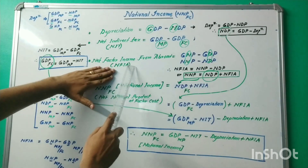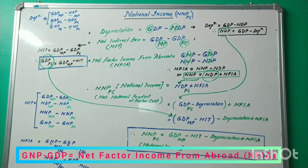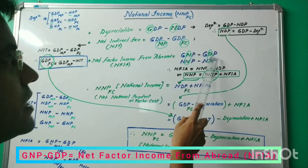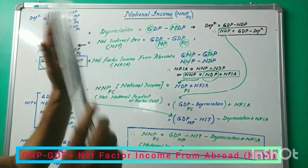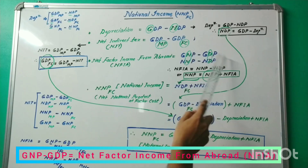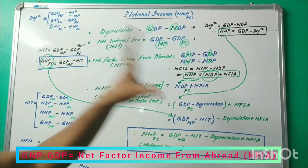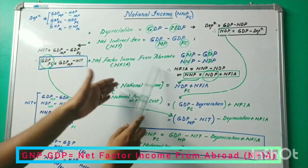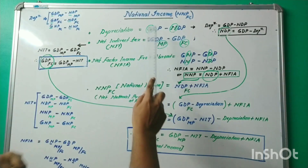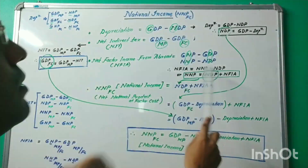Number three: net factor income from abroad, that is NFI. What I have written: GNP minus GDP, or NNP minus NDP. You need to focus on national minus domestic. For example: GNP factor cost gives GDP factor cost; GNP market price gives GDP market price; NNP market price gives NDP market price. So national minus domestic is net factor income from abroad. To summarize: gross minus net is depreciation; market price minus factor cost is NIT; national minus domestic is NFI.